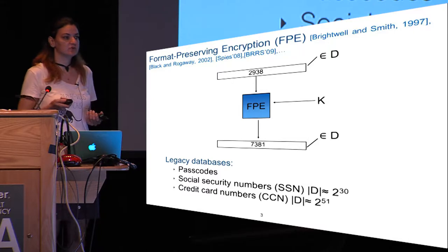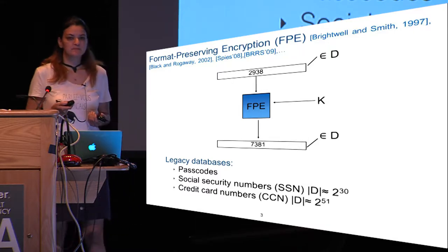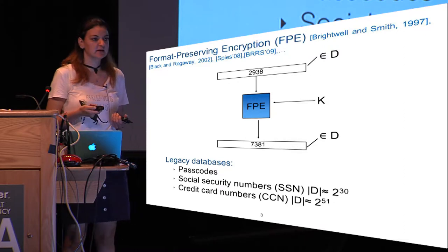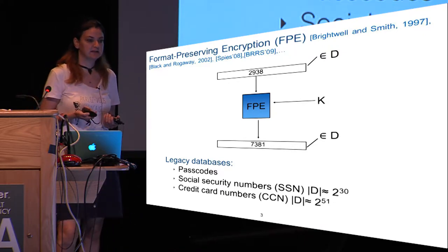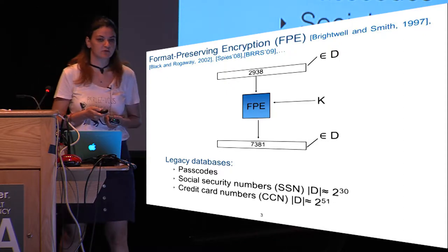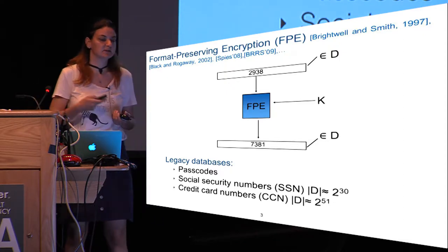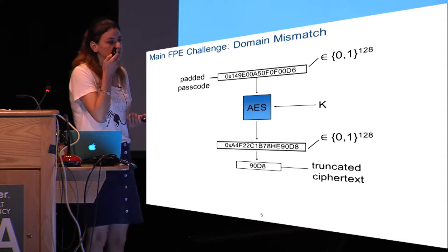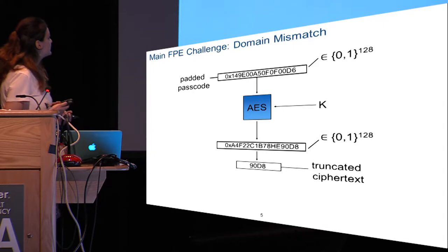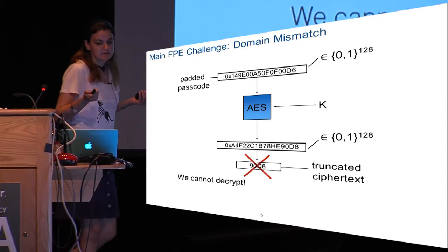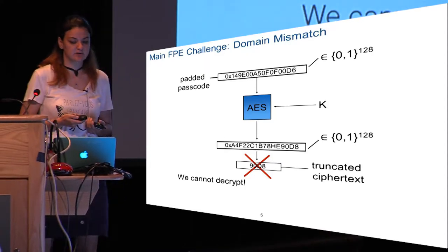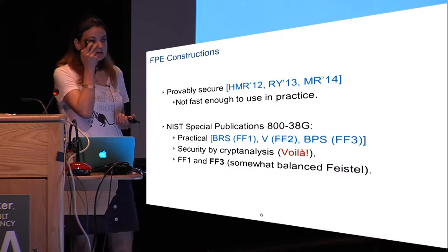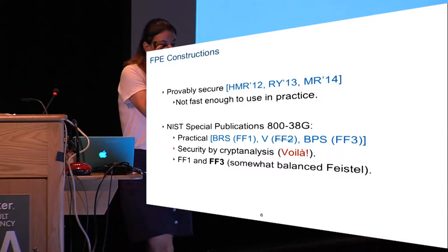FPE provides a method to encrypt those types of domains and is specifically designed for legacy databases, because it provides a way to encrypt in a transparent way to applications running on top of legacy databases — so no significant schema changes or application rewrites are required. One way to construct FPE could be to use a conventional block cipher like AES with a padded input and truncated output, but this disables decryption, so we need more principled methods.